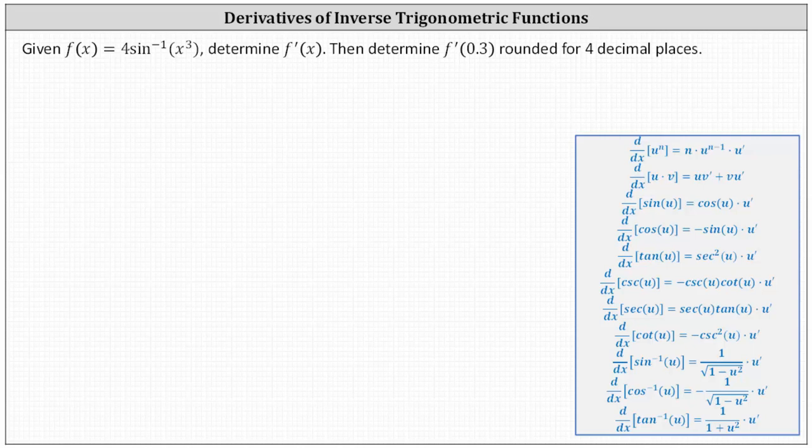To begin, notice f of x is a composite function where the outer function is inverse sine and the inner function is x cubed. This indicates we have to apply the chain rule to find the derivative function.